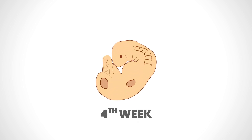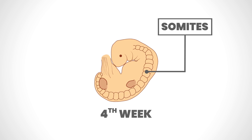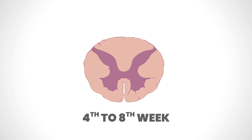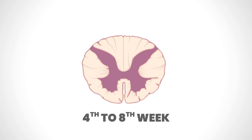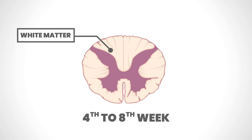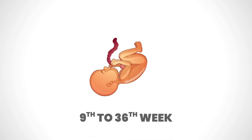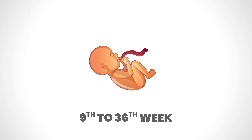By the fourth week, somites are formed from the medial paraxial column and are arranged in a curved fashion. Between the fourth and eighth week, vertebral column ossification from the somites occurs. Simultaneously, the white matter of the spinal cord appears from the neural tube. Between the ninth and thirty-sixth week, rotational movements in the fetus support further development of the spine.